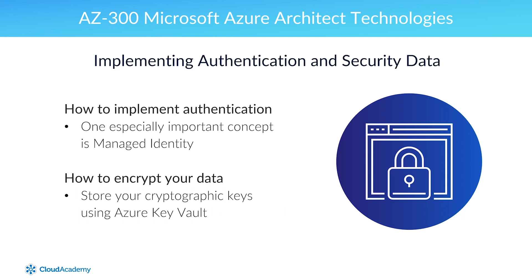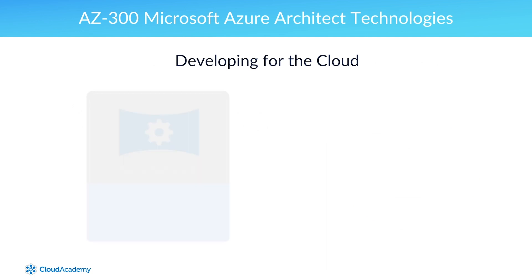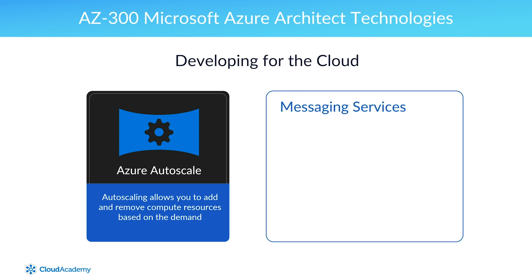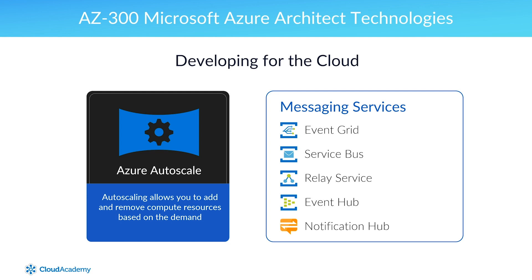Finally, we'll cover how to develop for the cloud. One of the greatest features of the cloud is auto-scaling. Instead of having to provision enough compute power to handle peaks, you can just tell Azure to add and remove compute resources based on the demand. You have to be careful how you configure auto-scaling though, because if you don't set up the rules correctly, it could have a big impact on your application's performance and cost. Another great feature of Azure is how easy it is to set up messaging between your applications. Azure has messaging services for every need, including Event Grid, Service Bus, Relay Service, Event Hub, and Notification Hub. In this section, you'll learn about all of them.